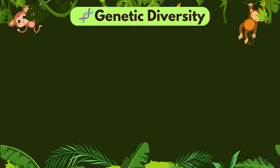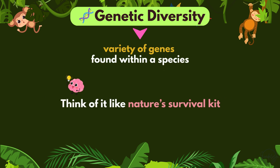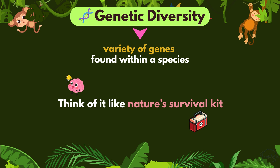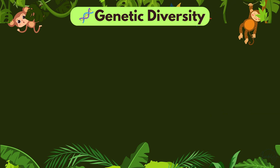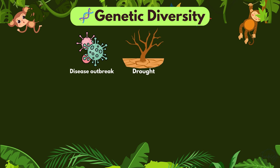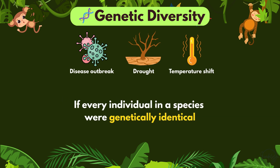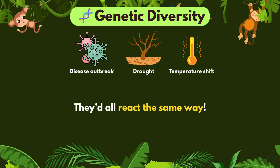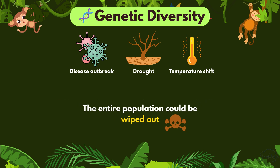Genetic diversity is the variety of genes found within a species. Think of it like nature's survival kit — a wide collection of traits that helps a species deal with changes in its environment. Let's say there's a sudden disease outbreak, a drought, or a temperature shift. If every individual in a species were genetically identical, they'd all react the same way. If the conditions are harmful, the entire population could be wiped out.